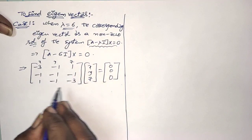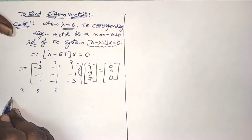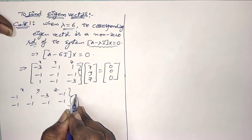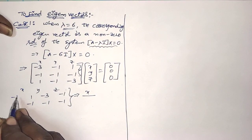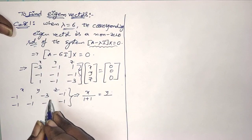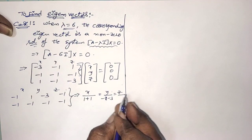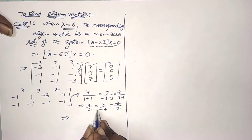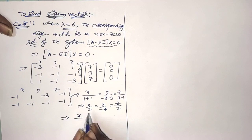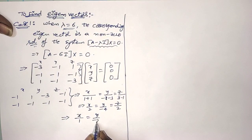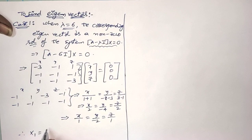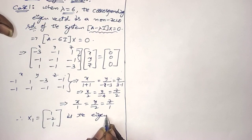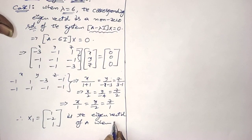Solving the first two equations using the cross-multiplication method: write the Y and Z coefficients. X over (minus 1 times minus 1 minus 1 times 1) equals Y over (1 times minus 1 minus minus 3 times 1) equals Z over (minus 3 times 1 minus minus 1 times 1). This gives X over 2 equals Y over minus 4 equals Z over 2. Dividing by 2: X1 equals [1, minus 2, 1], which is the eigenvector of A when lambda equals 6.